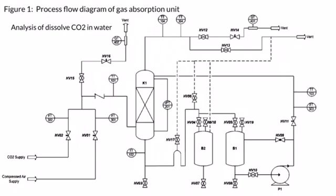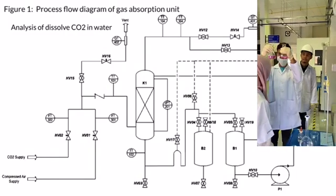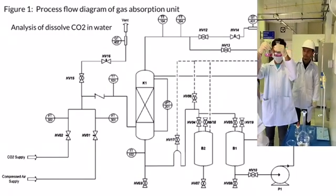If the sample turns red immediately, there is no free carbon dioxide present. If the sample remains colourless, titrate with 0.05 molar sodium hydroxide standard solution. Measure the volume of 0.05 molar sodium hydroxide required to reach the end point. The end point occurs when a definite soft pink colour is present.